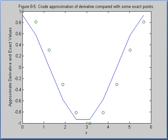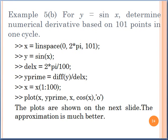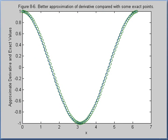This is the plot of the function. Now if the same example is asked on 101 points in one cycle, the changes are: define x from 0 to 101 points, still using 2π for one cycle. Y is the same, sin(x). Δx equals 2π/100 instead of 10. Define y prime as Δy/Δx, x ranges from point 1 to 100, and we plot it. This is the plot of the function on 101 points.